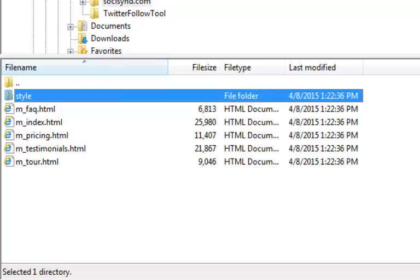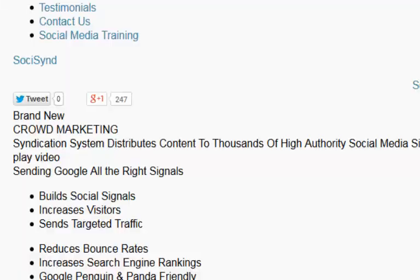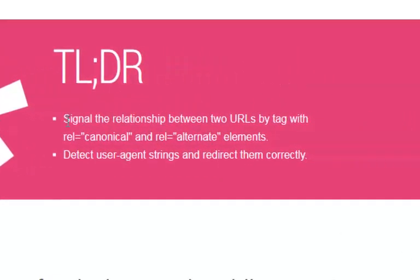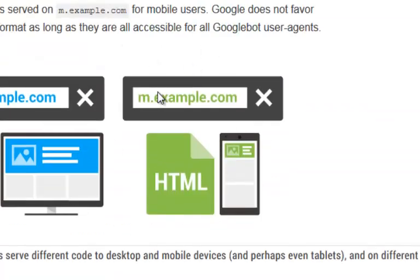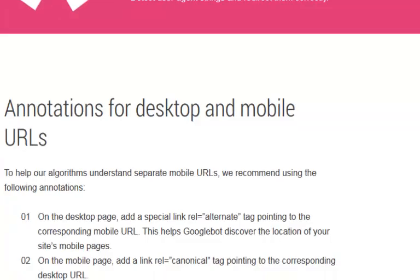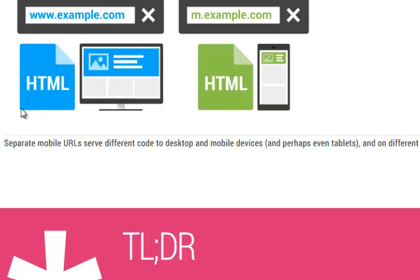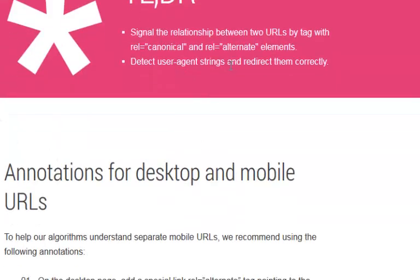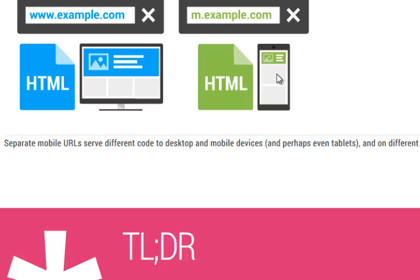What we need to do now is signal the relationship between the two URLs using the canonical tag. The canonical tag goes on the mobile page to tell Google that the mobile page is a duplicate of the main page. But we also need to use an alternate tag to tell Google we have an alternative mobile page, and we need to detect user agent strings to redirect mobile users from the desktop page.